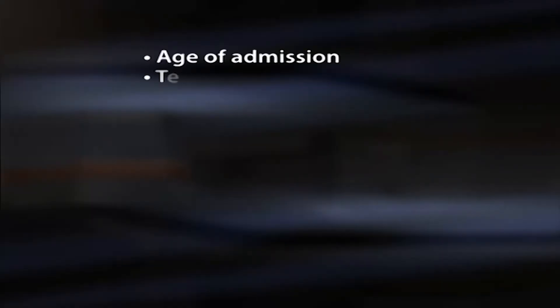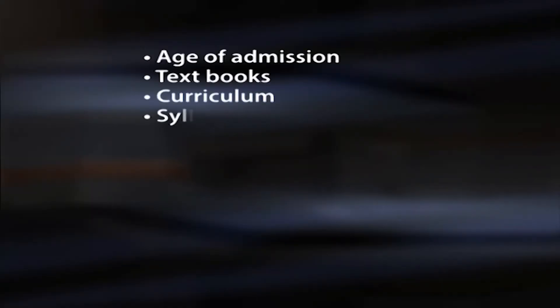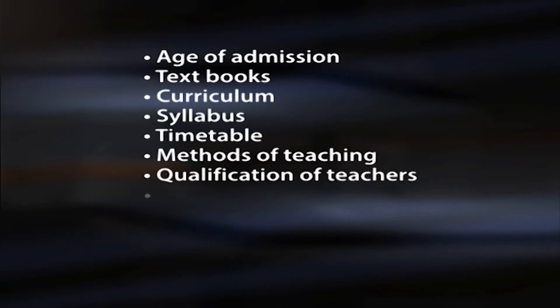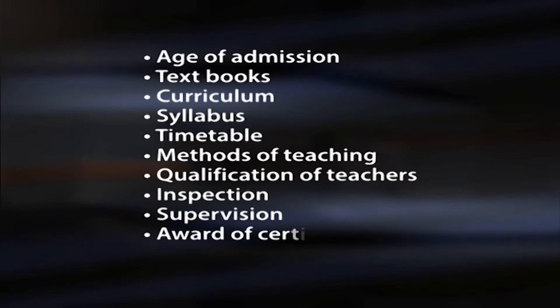Formal Education is rigid in many aspects. It involves a number of formalities such as age of admission, textbooks, curriculum, syllabus, timetable, methods of teaching, qualification of teachers, inspection, supervision, award of certificates and examination.